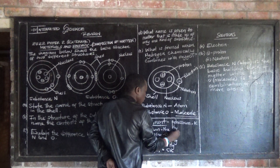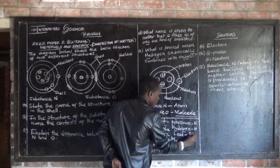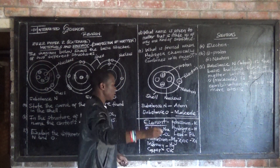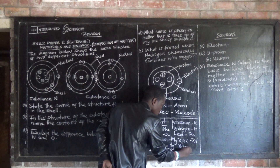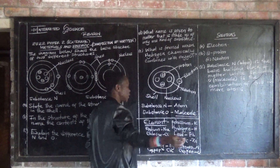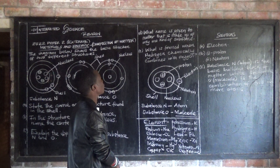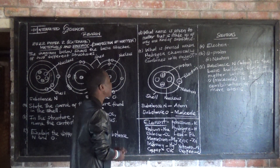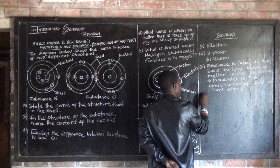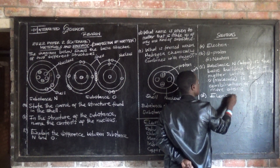So the question asks: what name is given to matter made up of only one kind of substance? The answer is an element. An element is a substance made up of one kind of atom. The answer is: element.